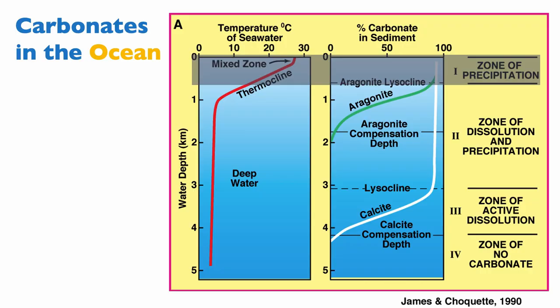So what happens in normal marine settings? What can we expect? Remember the diagram we saw when we talked about the chemistry of carbonate precipitation — it shows that pressure and temperature impact the saturation of carbonates. Most of the settings we're looking at are in shallow water, and this shallow water setting in tropical zones where most of the T-factory carbonates are produced is effectively a zone of net precipitation.